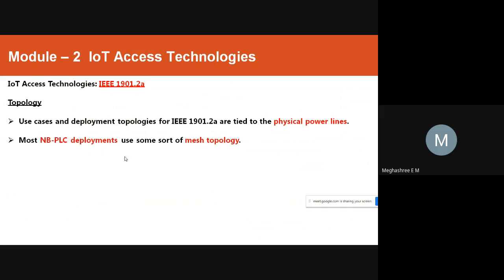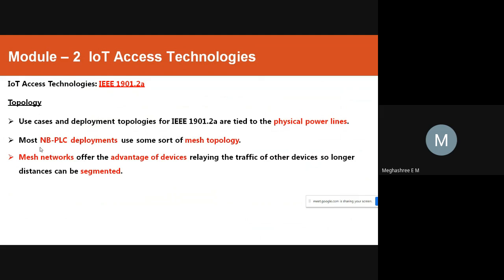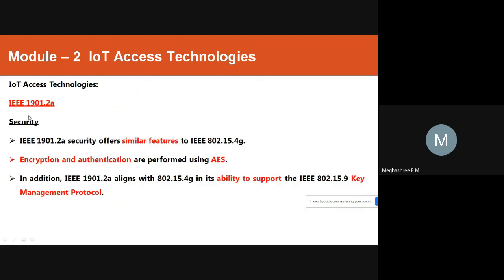The deployment topology for IEEE 1901.2a is tied to the physical power lines. It uses a mesh topology, which offers the advantage of devices relaying the traffic of other devices, so longer distances can be covered. The image shows the mesh topology for NBPLC, where different colored lines represent one-hop, two-hop, three-hop, and four-hop connections.